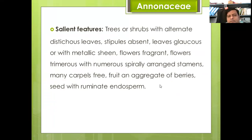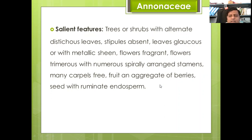The salient features of Annonaceae: plants may be trees or shrubs with alternate, distichous leaves; stipules absent; leaves glaucous or with metallic shine. Flowers may be fragrant. Flowers are trimerous with numerous spirally arranged stamens, many free carpels, fruits aggregate or berry, and seeds with ruminate endosperm.